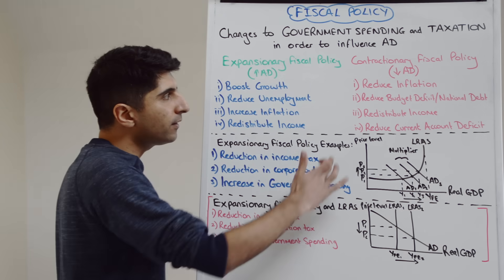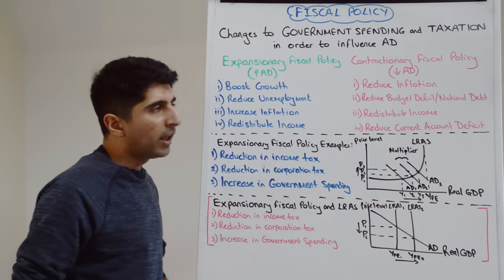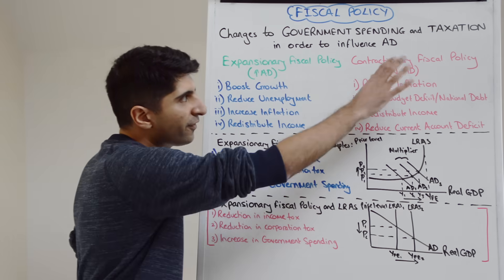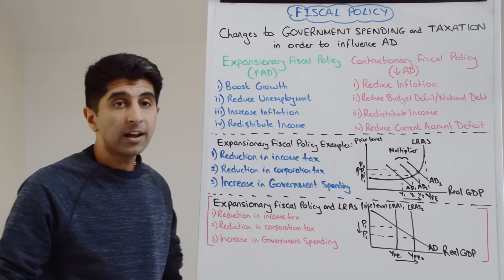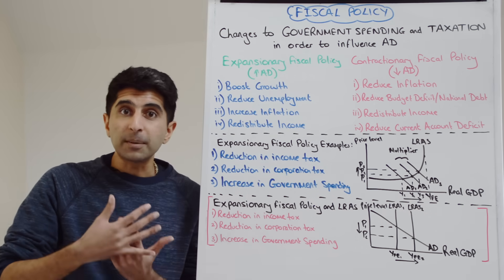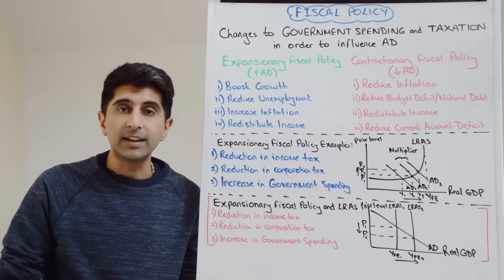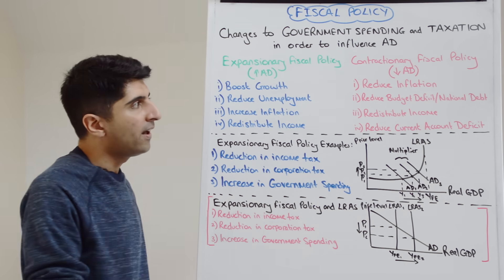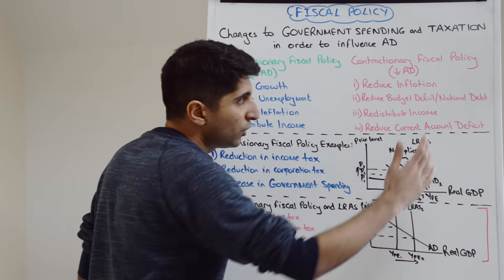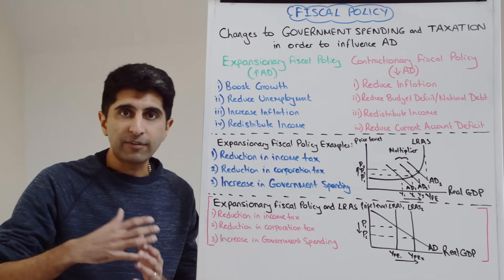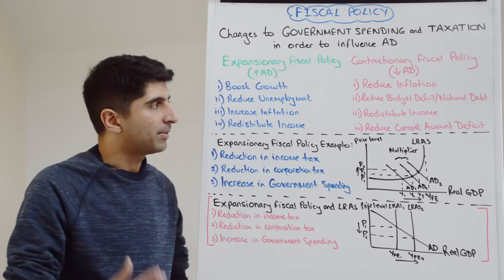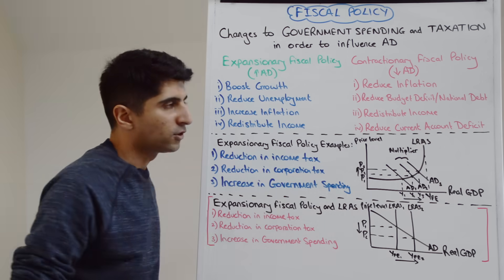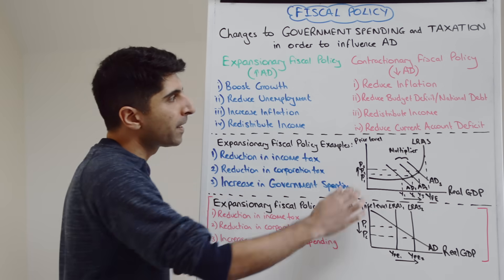So in reality, the major reason would be contractionary fiscal policy not really for an AD effect, but to reduce the budget deficit — to reduce the amount of borrowing that the government is doing yearly, and therefore to reduce the overall level of debt that the government has. So that would be the primary reason: to try and control government finances.